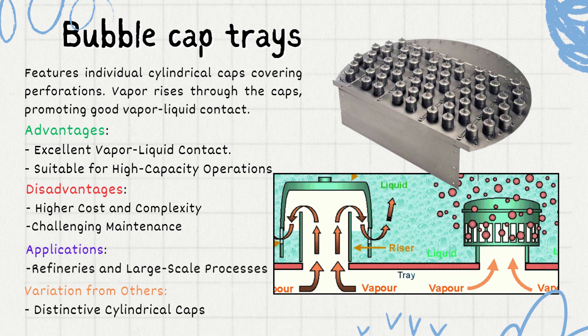The maintenance of individual caps can be more challenging compared to simpler tray designs. Bubble cap trays are commonly employed in refineries and large-scale distillation processes where efficient separation is paramount. The most distinguishing feature is the presence of individual cylindrical caps, which set them apart from other tray designs and provide enhanced vapor-liquid contact. This design feature contributes to efficiency but also adds to overall complexity.